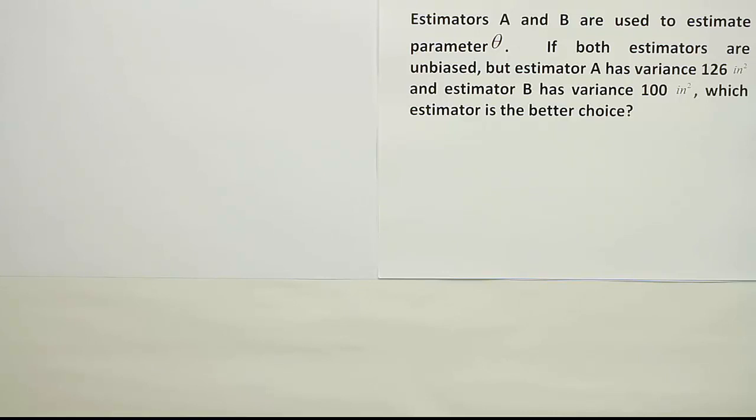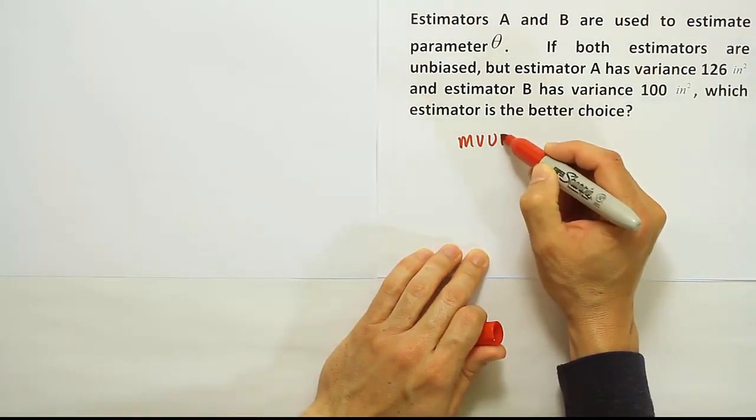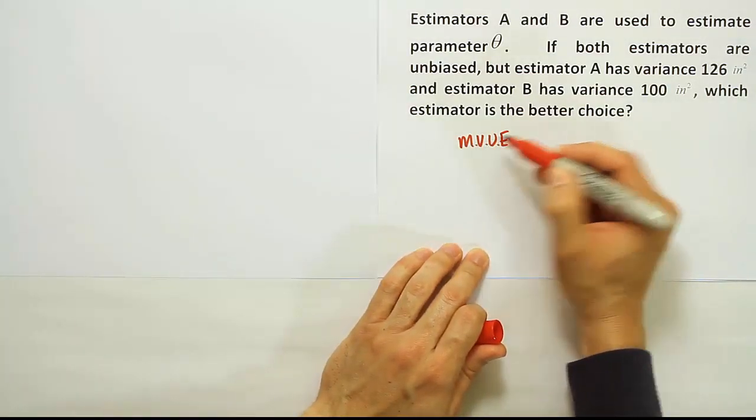Of course variance and standard deviation are connected just by a square root. So smaller variance is the same as saying smaller standard deviation. We always want the minimum variance unbiased estimator if we can get it.